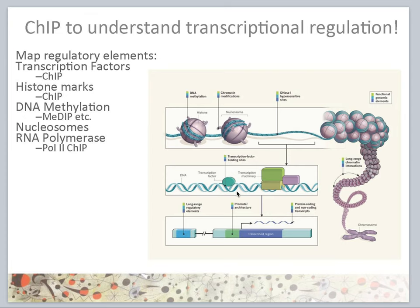Once a gene is activated by a transcription factor and co-expressors, the gene is transcribed by RNA polymerase II. RNA polymerase II is also something that can be monitored by ChIP.